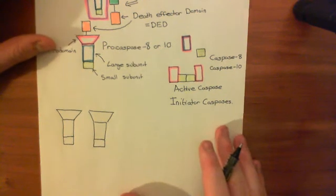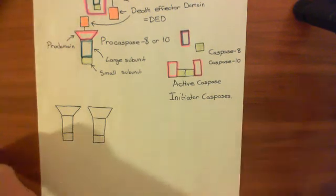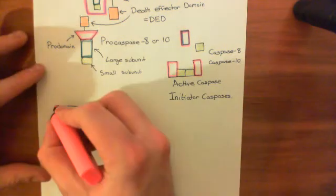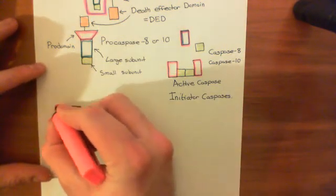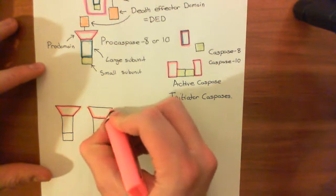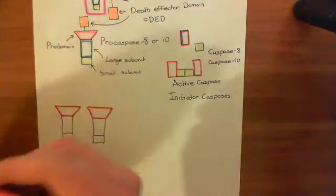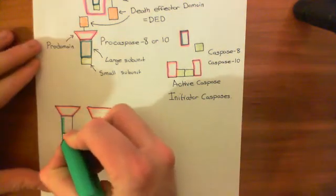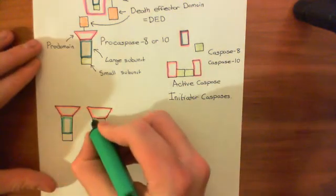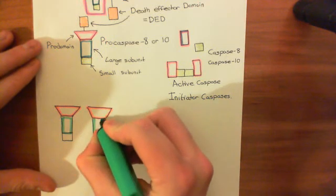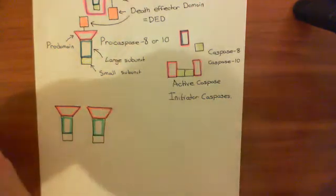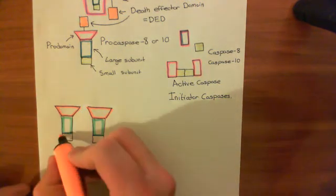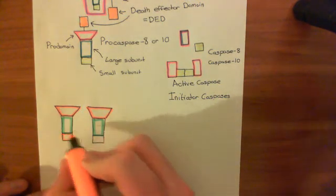Let's say we have two pro-caspases here, and let me color in the different portions of them. Let's color in the pro-domains up here in red. So here are the pro-domains, and let's color in green the large subunit. This is the large subunit of the caspases, well, the pro-caspases at the moment. And then finally, in orange, we'll have the small subunit down here.